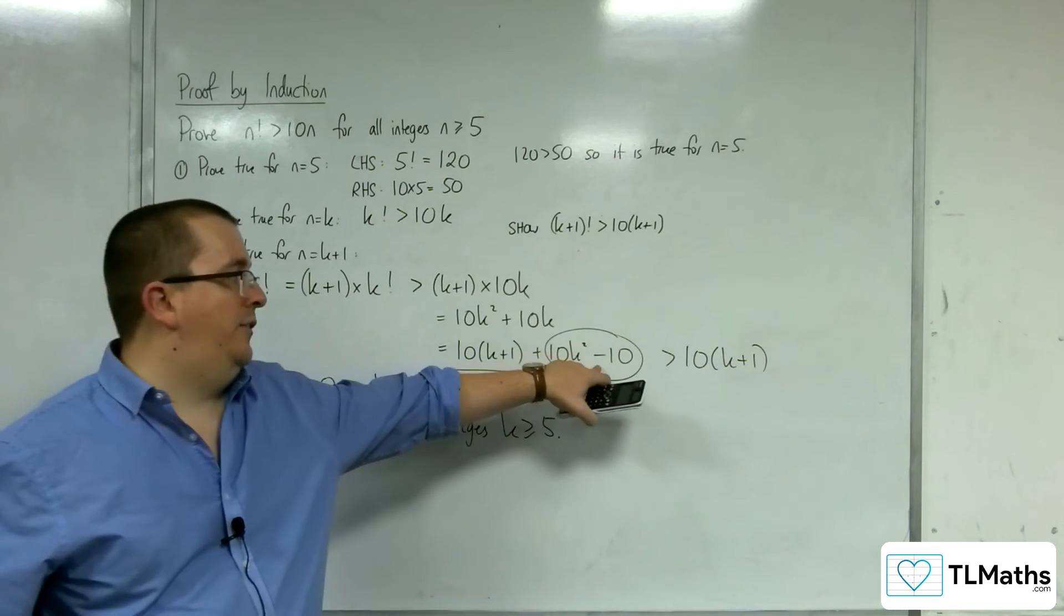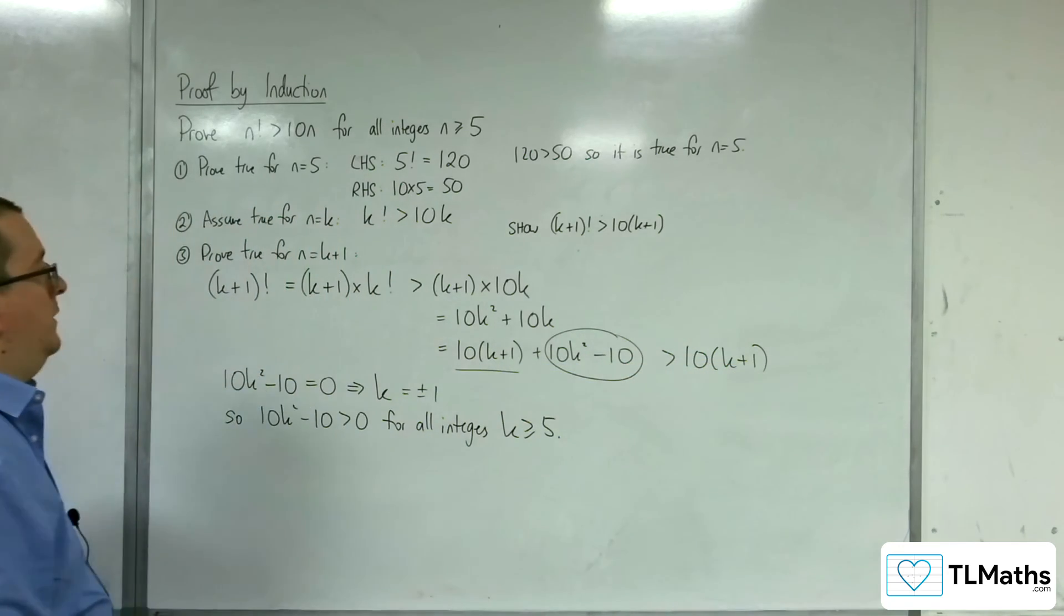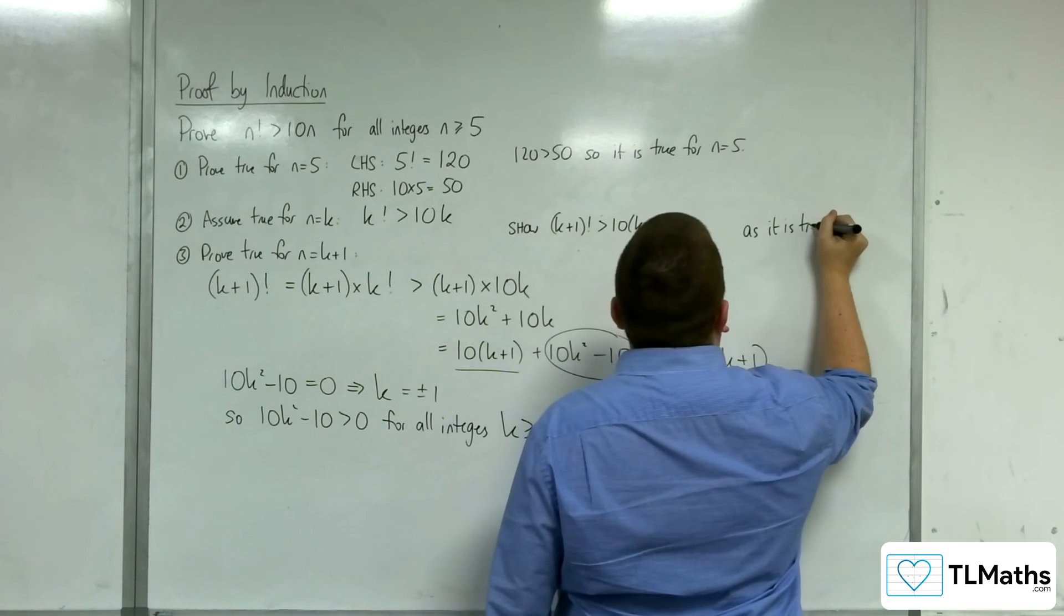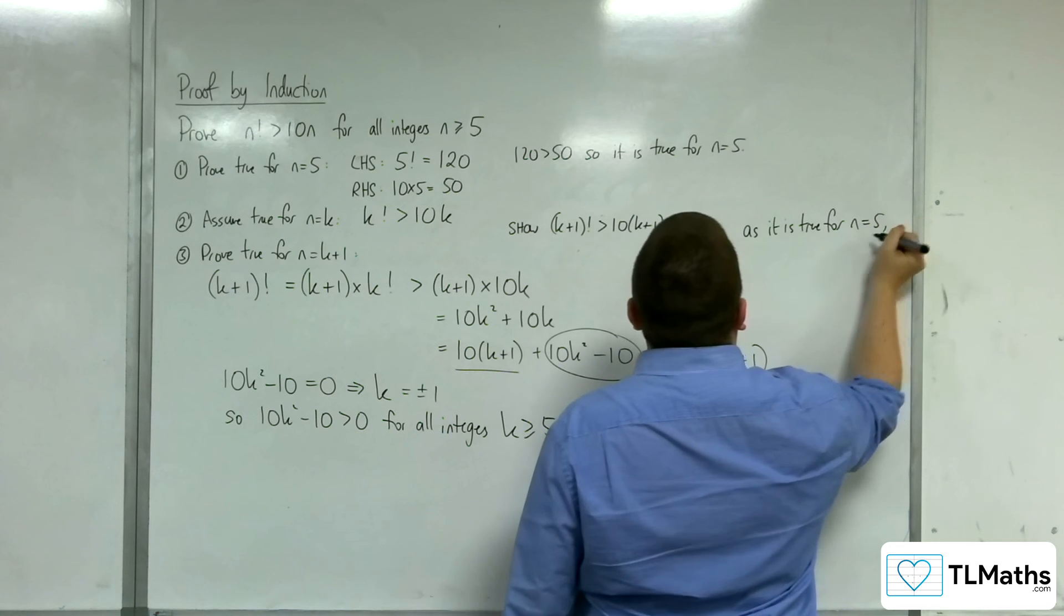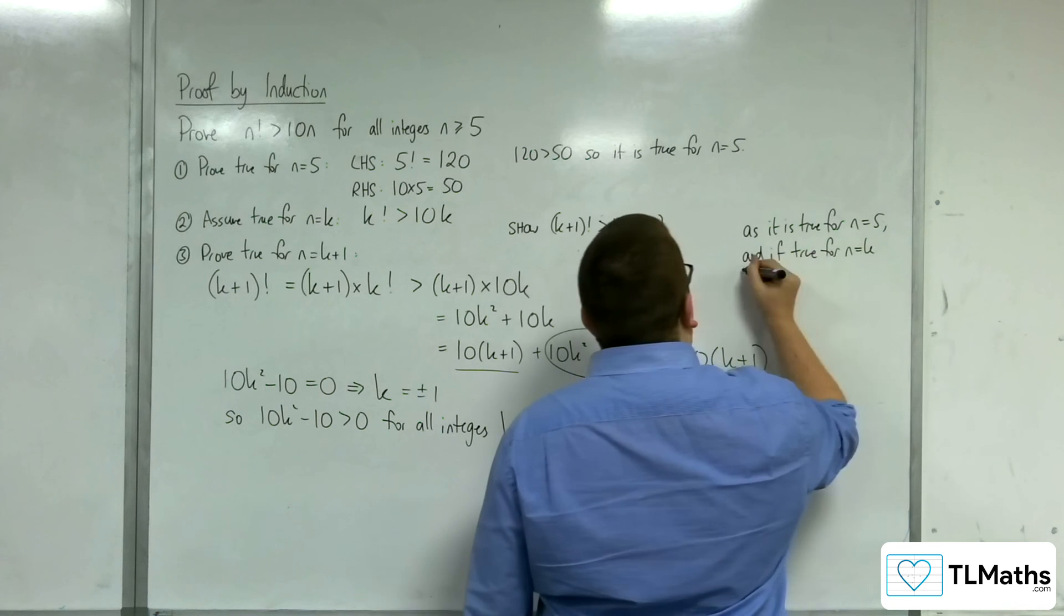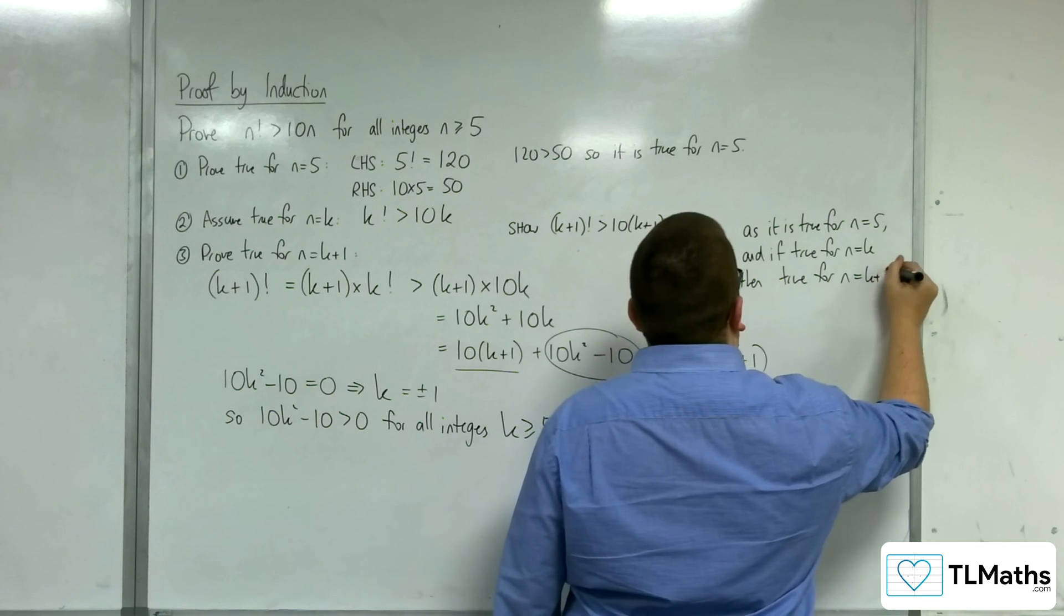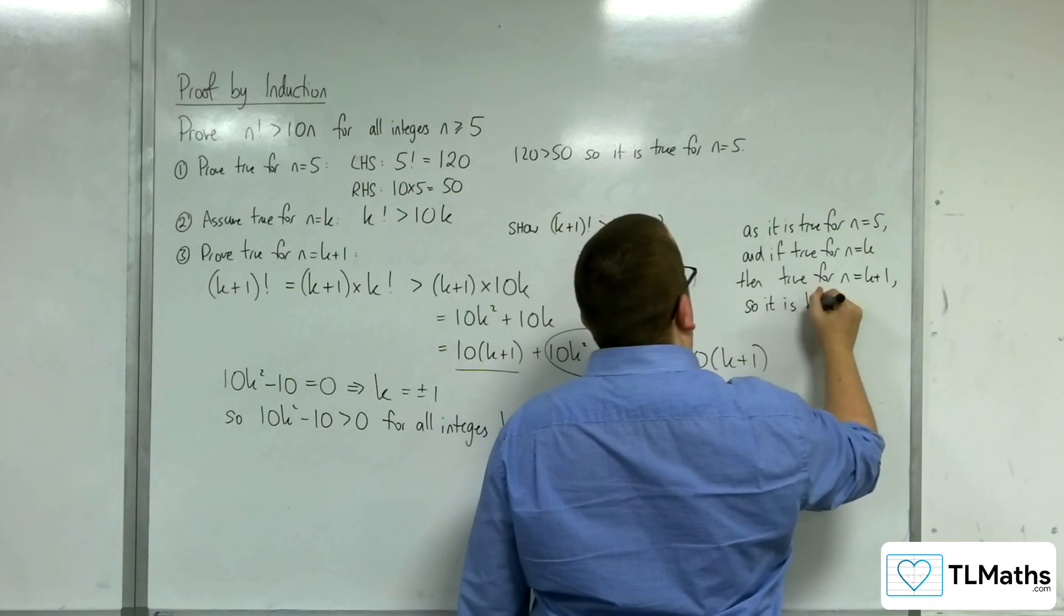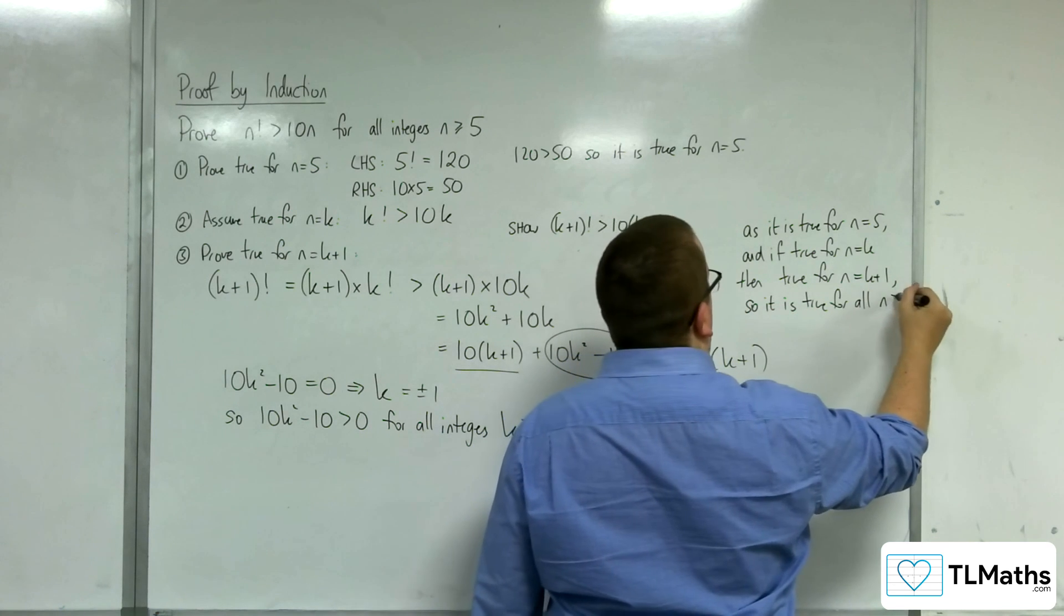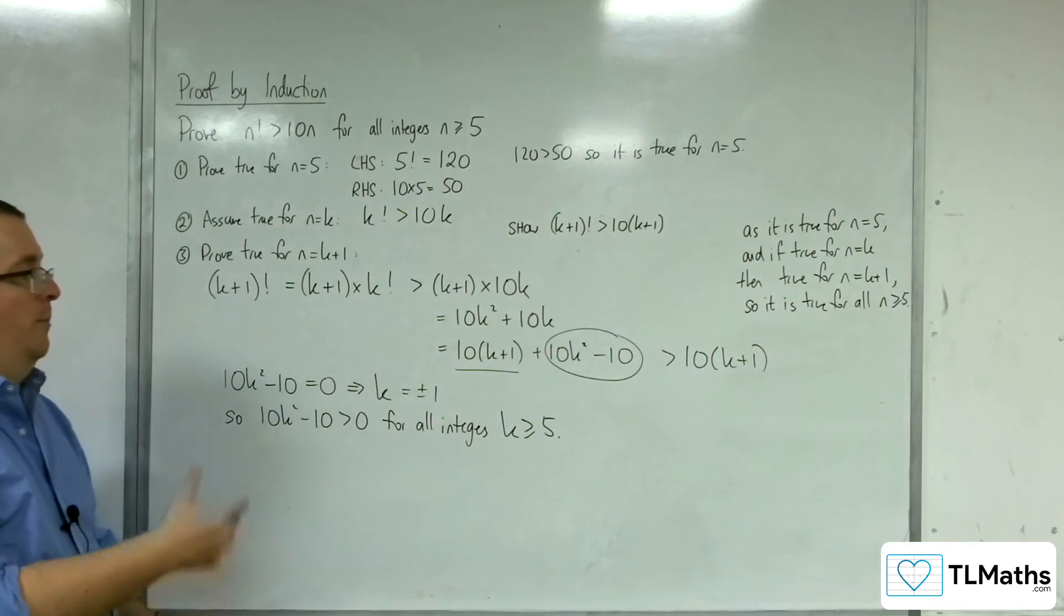So, that showed that this is greater than 0, and so this statement is correct. And, I've done it. So, as it is true for n equals 5, and if true for n equals k, then true for n equals k plus 1. So, it is true for all n greater than or equal to 5.